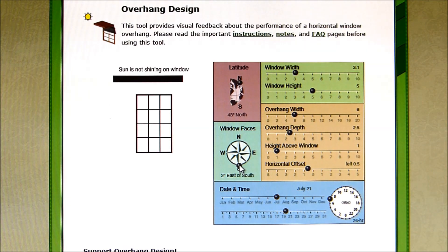You can change the direction that the window faces. We're going to deal with a window that faces south, and we can set the date and time that we want to look at down here.